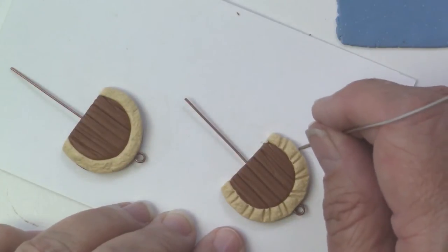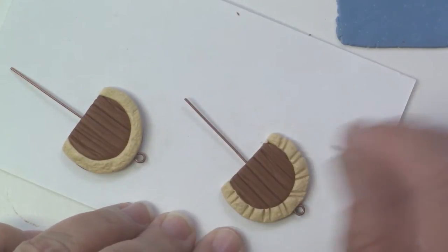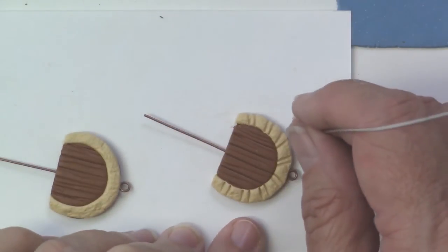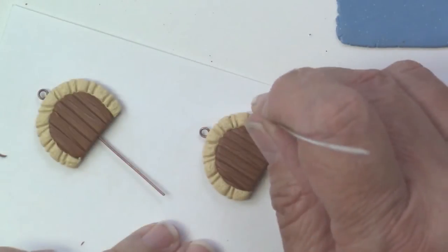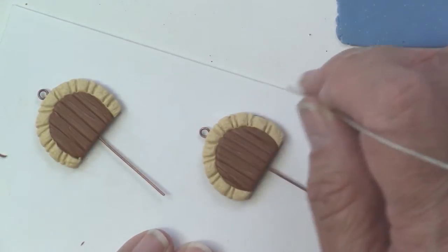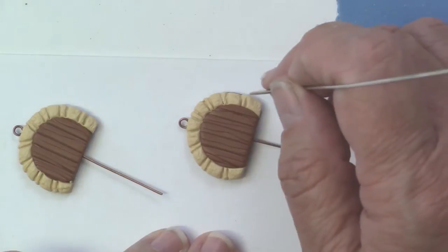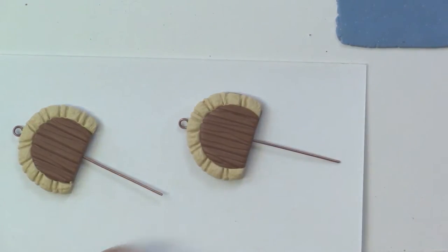I'm impressing that clay every fraction of an inch to make sure I've got a little stone look. I'm taking the needle tool and going around the edge to give it a little indent. It really does simulate stone. I'll go around the whole outside of those earrings.